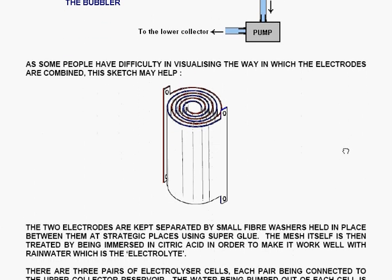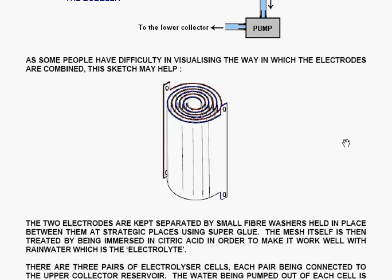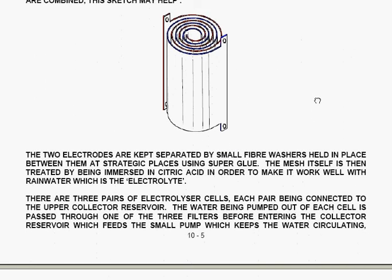Now some people have difficulty in visualising the way in which the electrodes are combined. So this sketch may help. You have the electrodes wound round and round and round each other from the two sides. They are kept separated by small fibre washers which are held in place between them at strategic places using superglue. The mesh itself is then treated by being immersed in citric acid in order to make it work well with rainwater, which is the electrolyte.